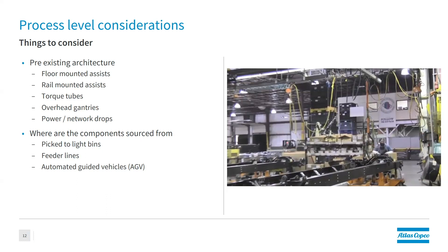Where are the components sourced from? We might have pick-to-light bins, feeder lines, or AGVs. We want to talk about whether components come to the station or whether the operator has to move around a lot. Can tooling be positioned closer to where the operator is so they don't have to walk as far between multiple tools or sockets? We also don't want to interfere with where actual parts are being provided, so we really want to make sure we're utilizing the space in the best way.